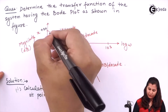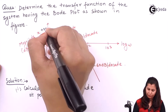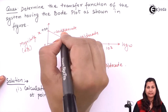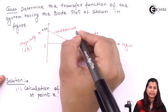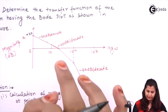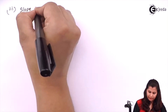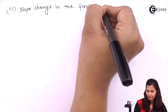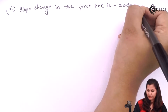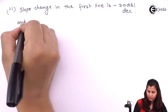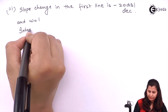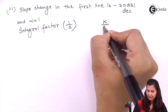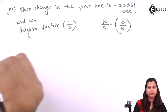The slope is minus 20 dB per decade and it starts from omega equals 1, passing through that point. This indicates an integral factor present in the denominator. The slope change in the first line is minus 20 dB per decade at omega equals 1, so it indicates an integral factor 1/s. Combined with k equals 10, we get 10/s.